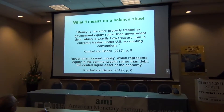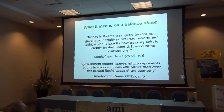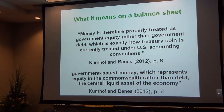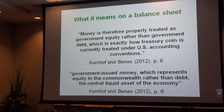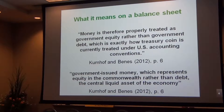Dr. Michael Kumhoff and Jeremy Abenas at the IMF — Dr. Kumhoff came here for at least three or four conferences and absorbed everything, then wrote his fantastic paper, 'The Chicago Plan Revisited.' I love this quote: money is therefore properly treated as government equity rather than government debt, which is exactly how Treasury coin is currently treated under US accounting conventions — that Federal Accounting Standards Advisory Board handbook.